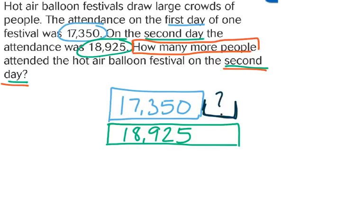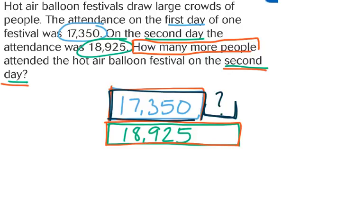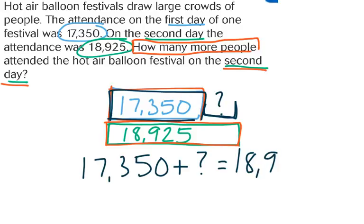When I look at this model as a whole, here is my whole piece — this is my second day, the whole piece I'm comparing to — and here is my first day. The first day in blue plus my question add up to equal my whole. So if I were to set this up as an addition problem, it would look like this: 17,350 plus my unknown equals 18,925. I'm trying to find what this unknown is.